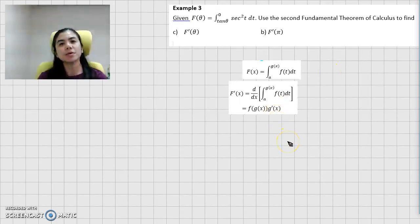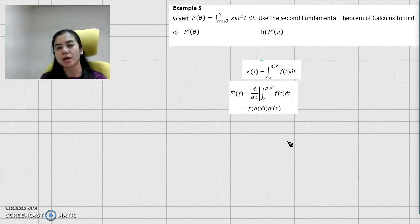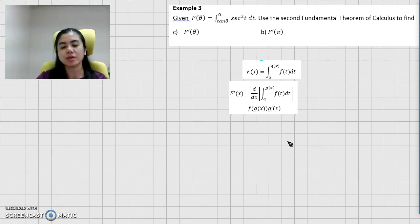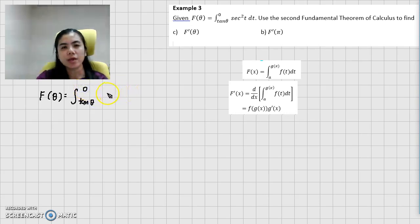First, let's look at the last example that we have here. So now we have the antiderivative in terms of theta. The first thing that you have to do is write down the question. We have L of theta, that is from tangent theta to 0, and we have secant squared t dt.